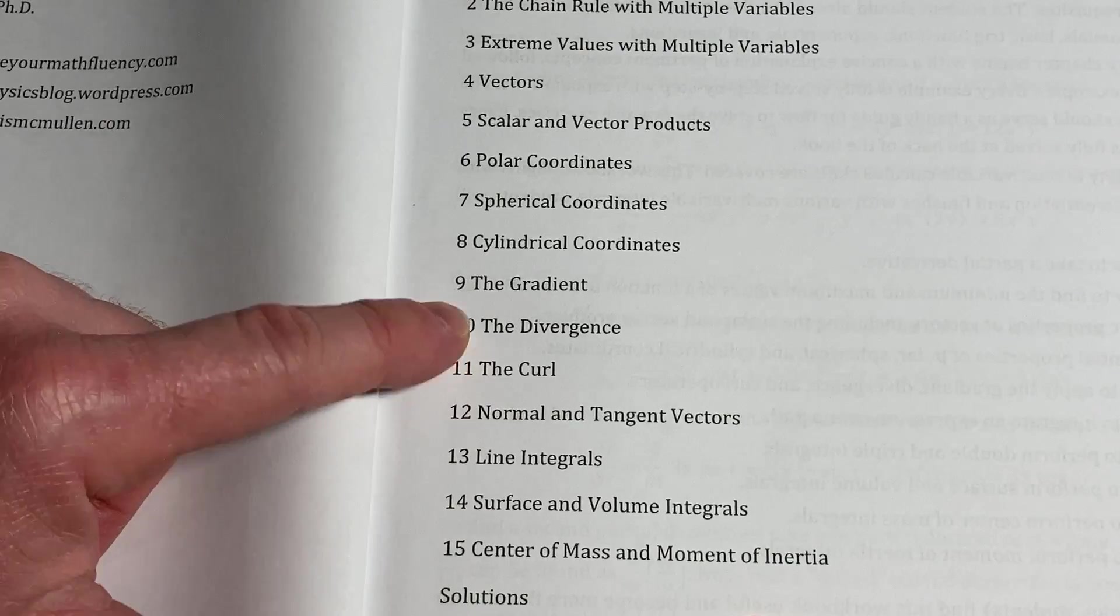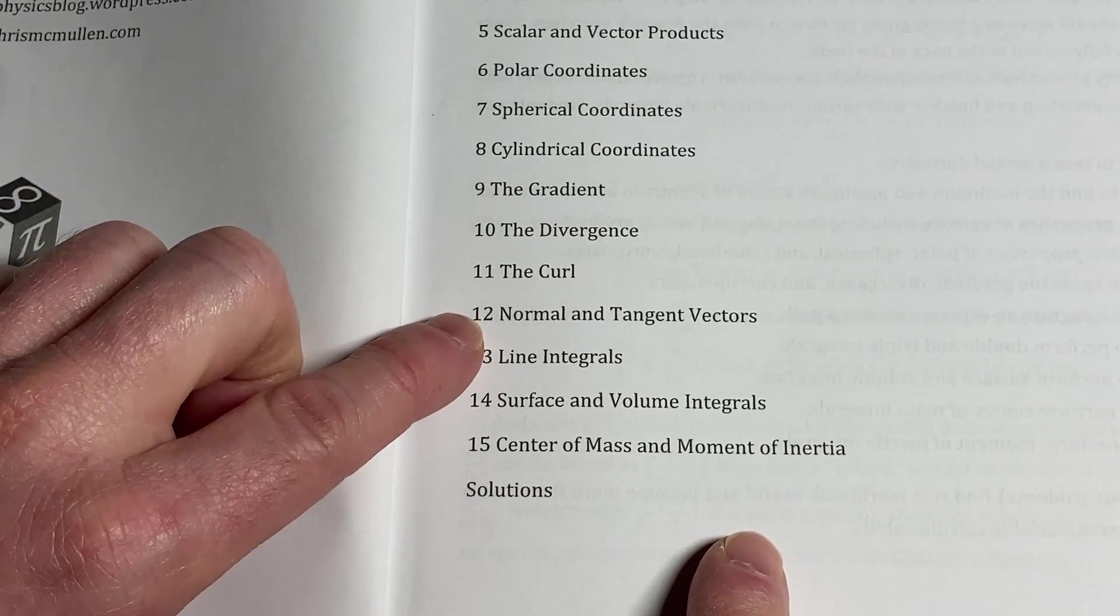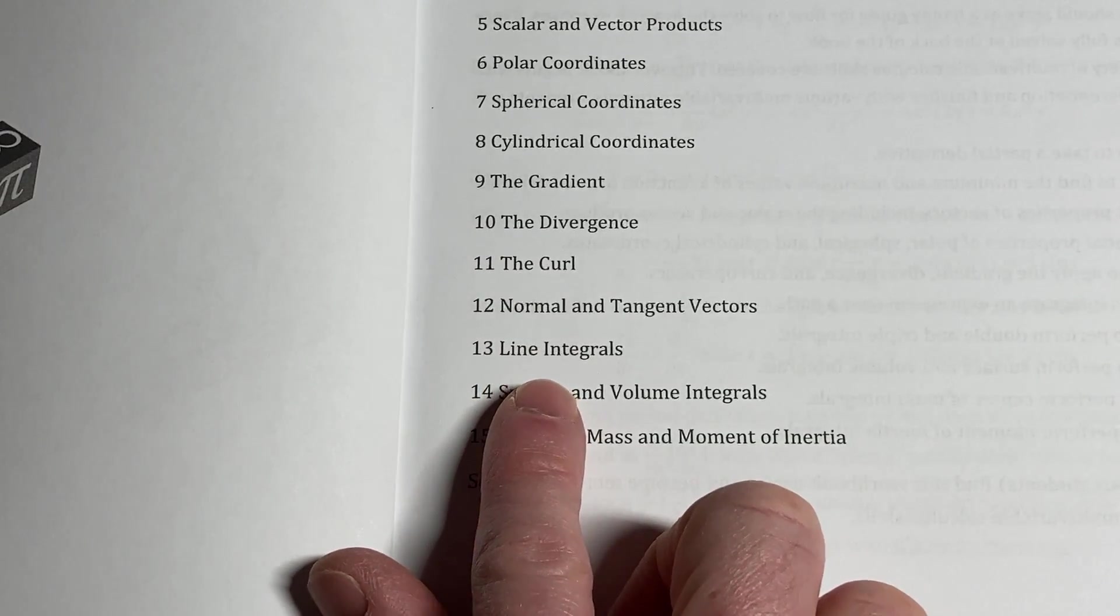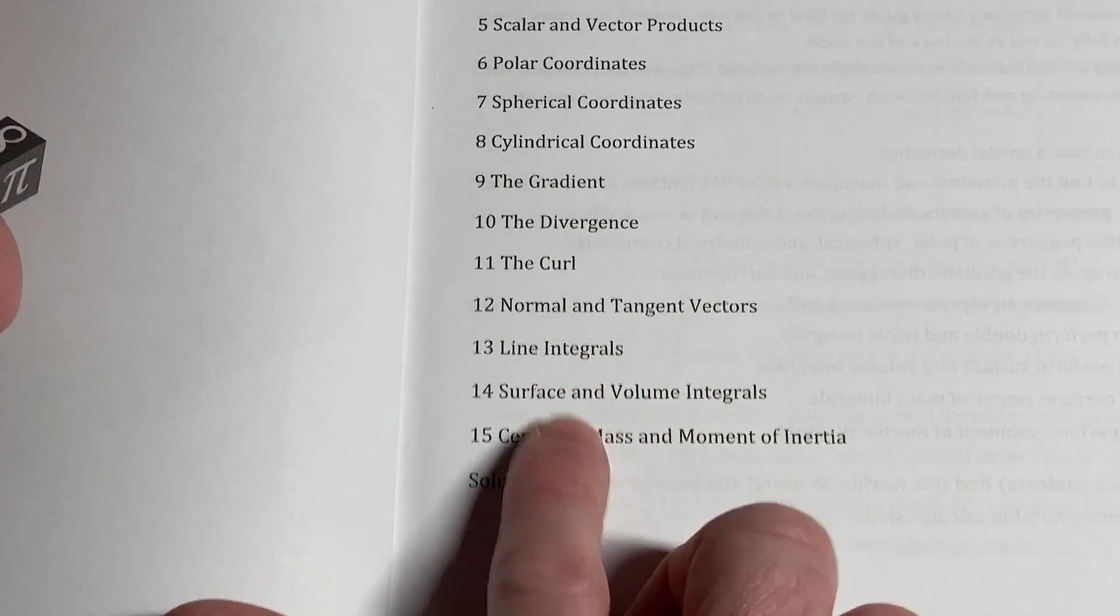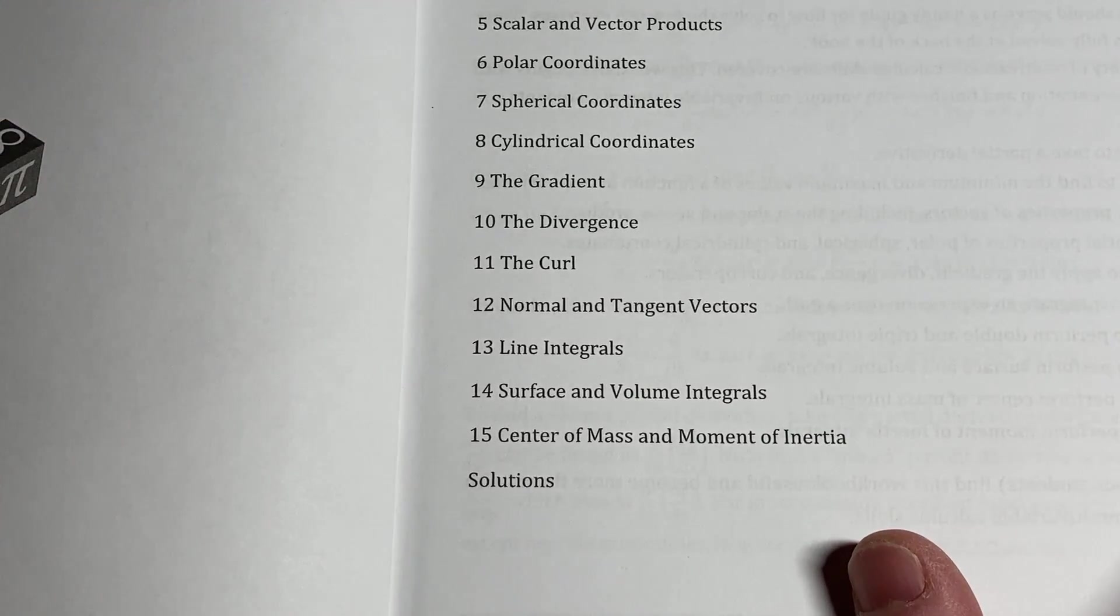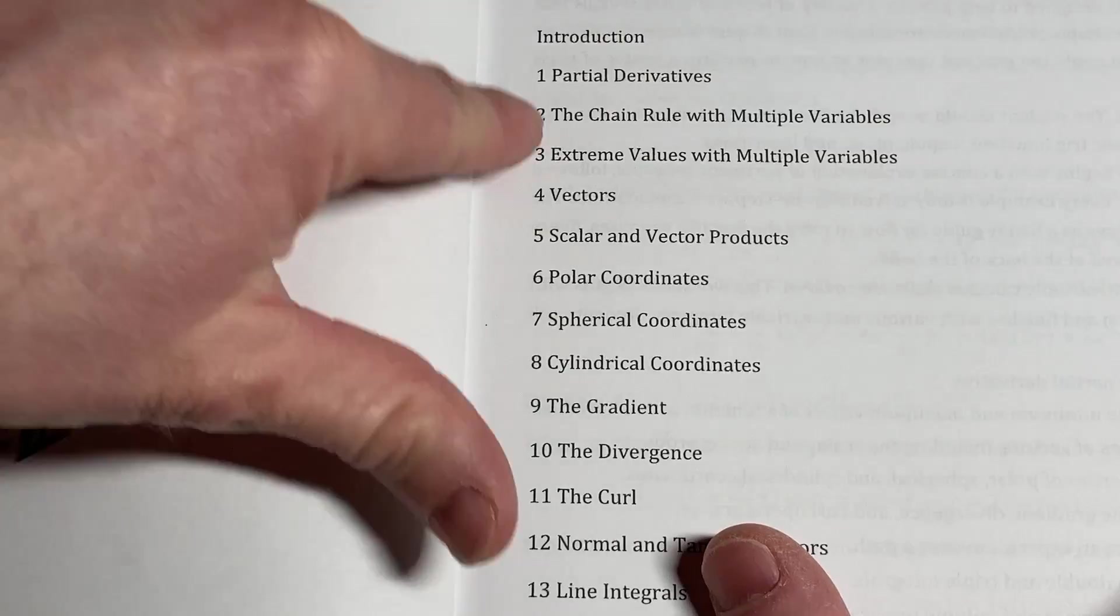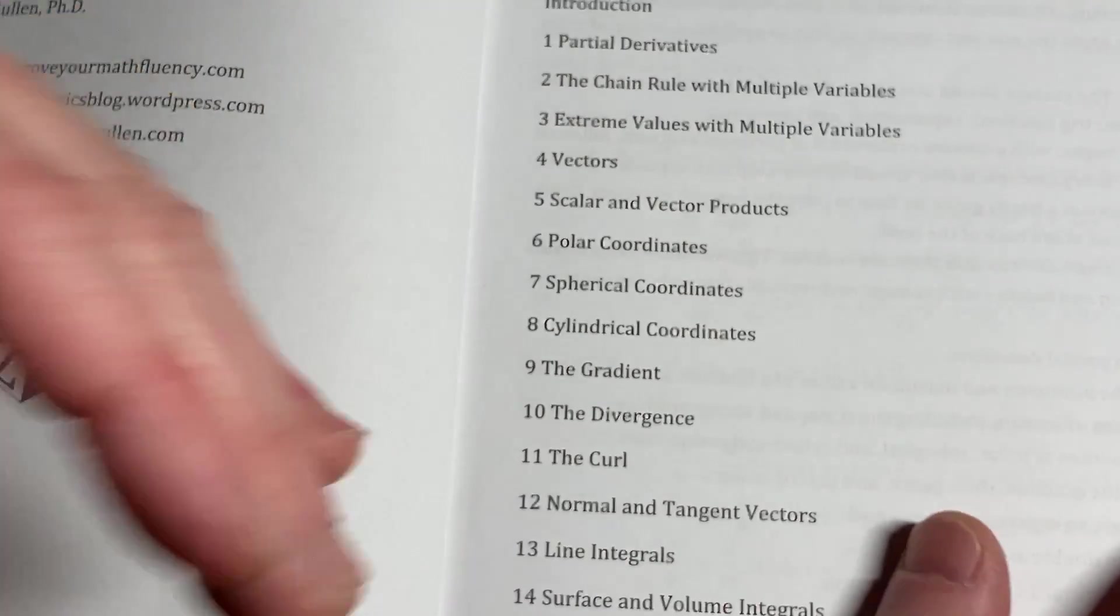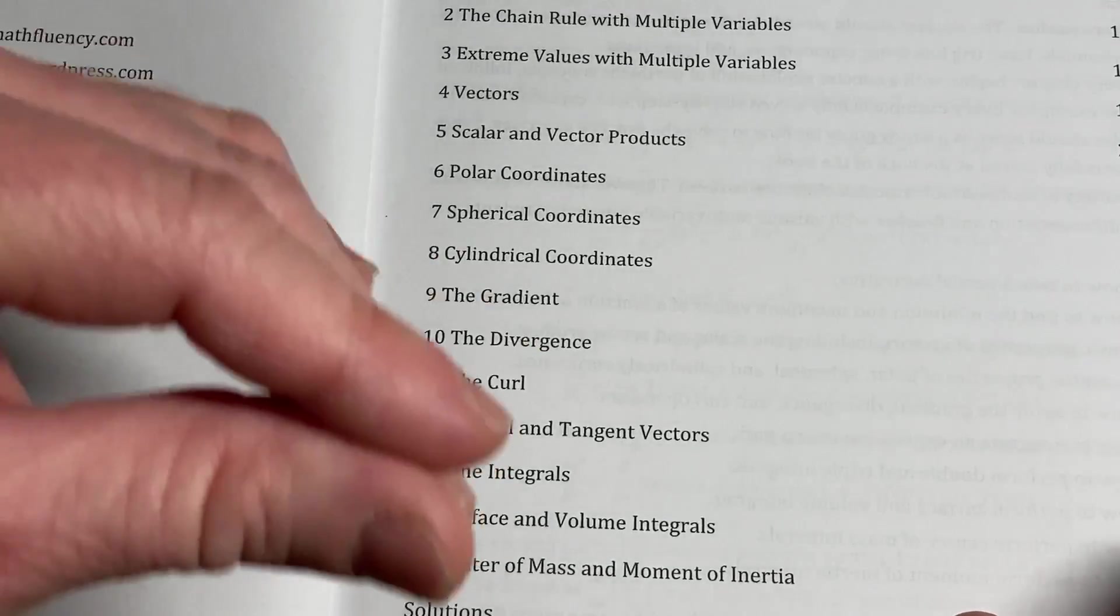Divergence and curl, not too bad. But again, the examples here are very good. Normal and tangent vectors, again, really, really nice place where the book shines. Right here, here's where the book gets really good. Line integrals, very, very good to have examples of these surface and volume integrals, and then center of mass and moment of inertia. Really nice to have these extra examples for these sections. And the other sections are good too, like partial derivatives and vectors and scalar and vector products. But I want to emphasize the ones I mentioned. Those add, I think, the most value to this book because of those examples that it has.